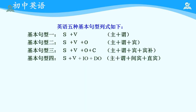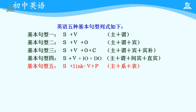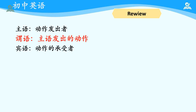同学们，在上一次的课程中，我们已经了解了英语的五种基本句型中的四种，分别是：主谓、主谓宾、主谓宾宾补和主谓间宾加直宾的结构。今天我们继续来学习英语的最后一种基本句型：Subject + Link Verb + Predicative，也就是我们经常说的主系表结构。同时我们今天还会介绍一种特殊的句型，也就是 there be 句型。